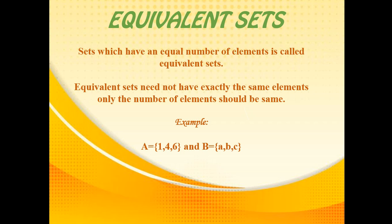See set A — we have three elements: 1, 4, 6. See set B — we also have three elements, but they are not the same. The elements are A, B, C. The number of elements is the same, but the elements themselves are not the same. We still say these are equivalent sets because the number of elements is the same.